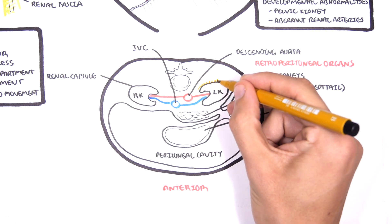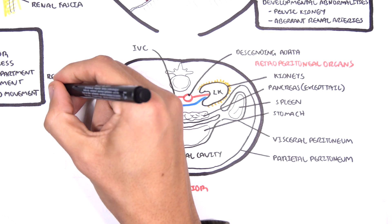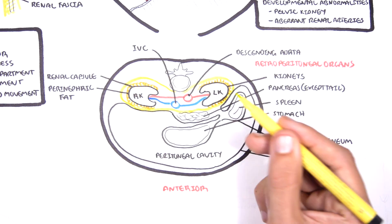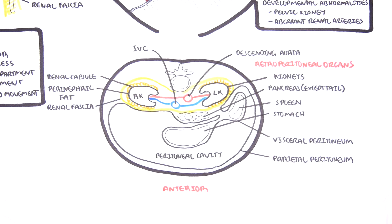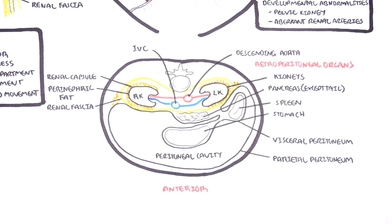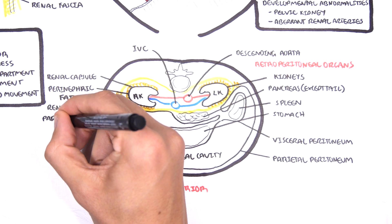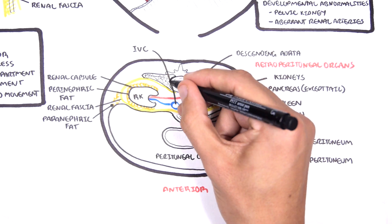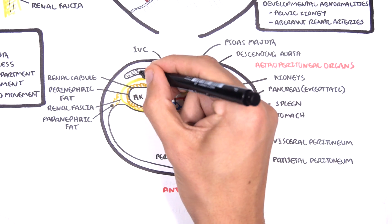The true renal capsule surrounds the kidneys. The perinephric fat surrounds the renal capsule and the kidney and then you have the renal fascia which surrounds everything. Those are the important layers that surround the kidneys. Now surrounding the renal fascia also known as Gerota's fascia is another fat layer called the paranephric fat. So the kidneys are pretty securely positioned not only by the ribs but also by fat.